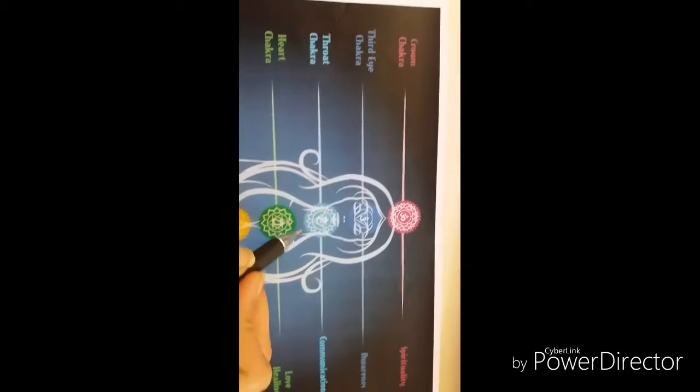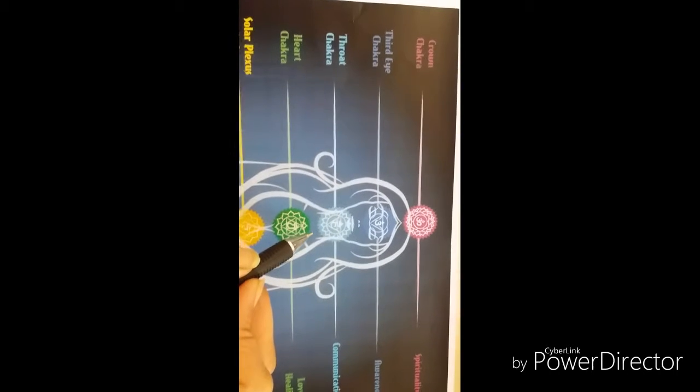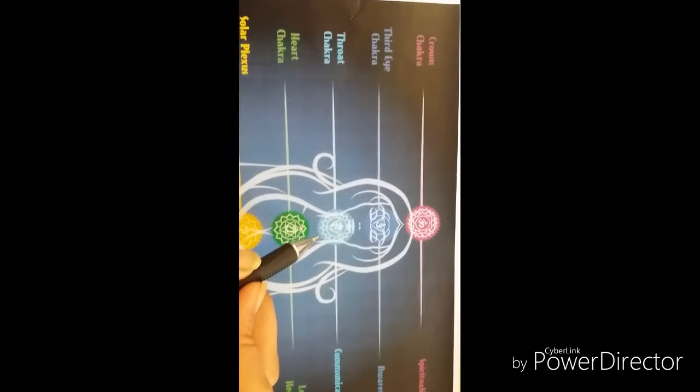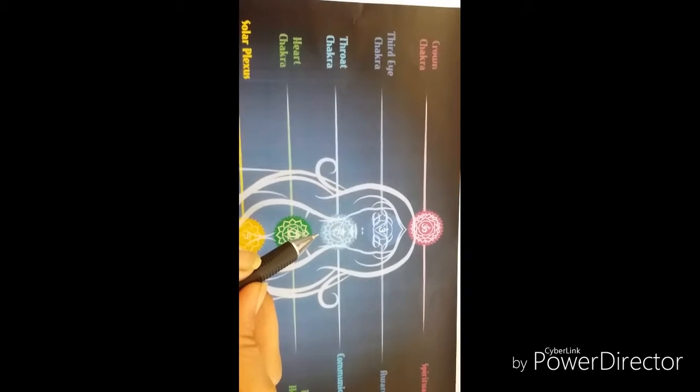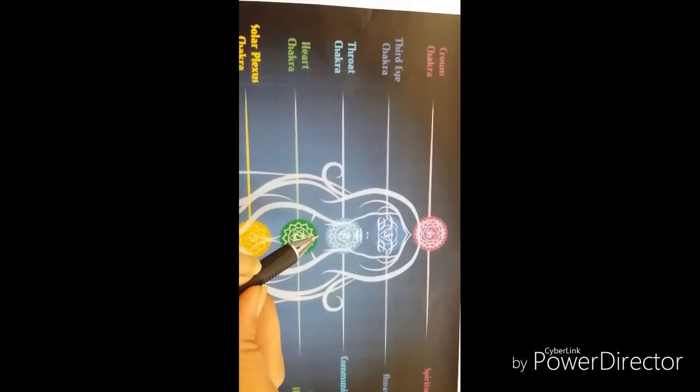It is also known as Vishuddhi chakra. It is a self-expression chakra. It's our ability to communicate. Its location is in the throat, and its emotional issues are communication, self-expression of feelings, and the truth.